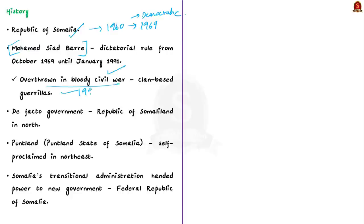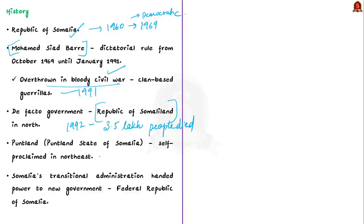After this incident, the northwest part of Somalia unilaterally declared itself as the independent republic of Somaliland. Later, clan wars erupted, there was no stability in the country, and this resulted in anarchy. By 1992, around 3.5 lakh Somali people had died due to disease, starvation, or civil war. As a result, another autonomous region emerged — the Puntland State of Somalia — which self-proclaimed itself in 1998.